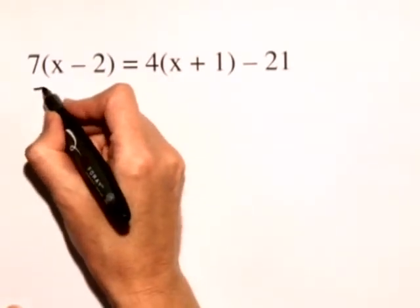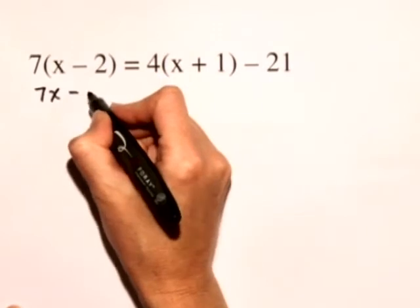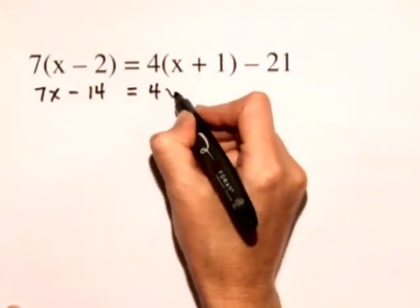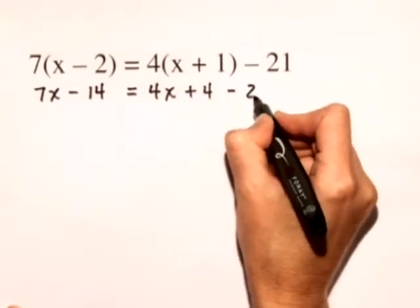So first we'll distribute and we have 7x minus 14 is equal to 4x plus 4 minus 21.